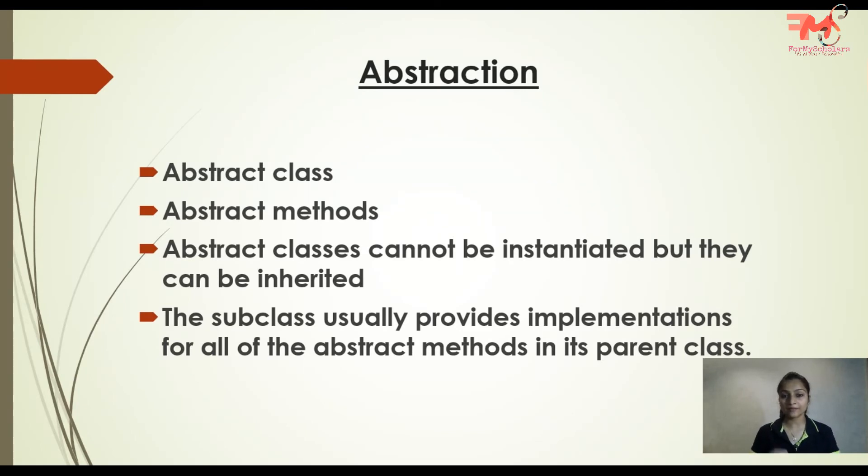So if object cannot be created, how will we use its data and methods? We will use the methods of that class using the subclass of that abstract class. Means if you have created an abstract class, then you have to make an inherited class or a subclass, and using that subclass you would be able to access the variables or the methods of that abstract class.